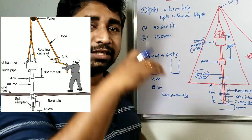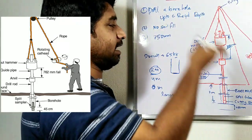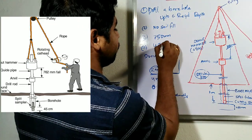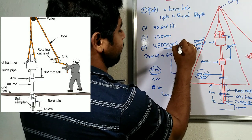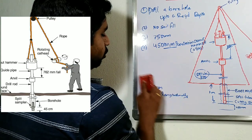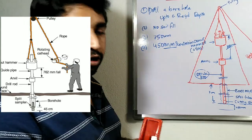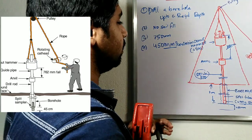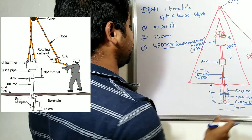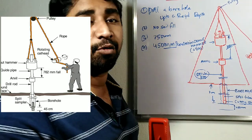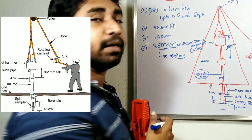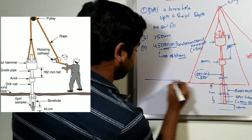The test is performed until 450 mm of penetration is achieved. While giving blows with the hammer, we record the number of blows required to achieve this 450 mm penetration. The 450 mm is divided into three parts of 150 mm each. The number of blows required for the first 150 mm is N1, for the second 150 mm is N2, and for the third 150 mm is N3.